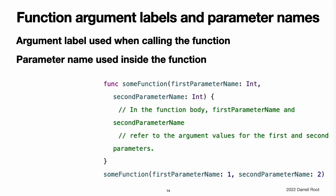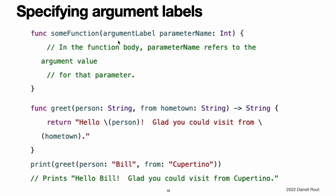Function argument labels and parameter names. Each function parameter has both an argument label and a parameter name. The argument label is used when calling the function — each argument is written in the function call with its argument label before it. The parameter name is used in the implementation of the function. By default, parameters use their parameter name as their argument label. All parameters must have unique names. Although it is possible for multiple parameters to have the same argument label, unique argument labels help make your code more readable. You write an argument label before the parameter name, separated by a space. Here is a variation of the greetPerson function that takes a person's name and hometown and returns a greeting. The use of argument labels can allow a function to be called in an expressive, sentence-like manner while still providing a function body that is readable and clear in intent.